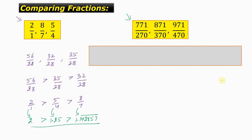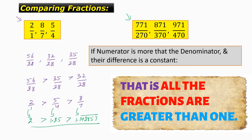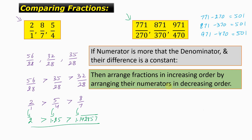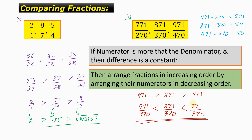Now, if the numerator is more than the denominator and their difference is a constant, we apply the opposite rule. In 771/270, 871/370, and 971/470, the numerators are all greater than the denominators and 771 minus 270 equals 871 minus 370 equals 971 minus 470, all equal to 501. Then arrange fractions in increasing order by arranging their numerators in decreasing order: 971 greater than 871 greater than 771. When numerators are in decreasing order, the fractions are in increasing order, so the sign of inequality changes. The answer is 971/470, 871/370, 771/270 in increasing order.